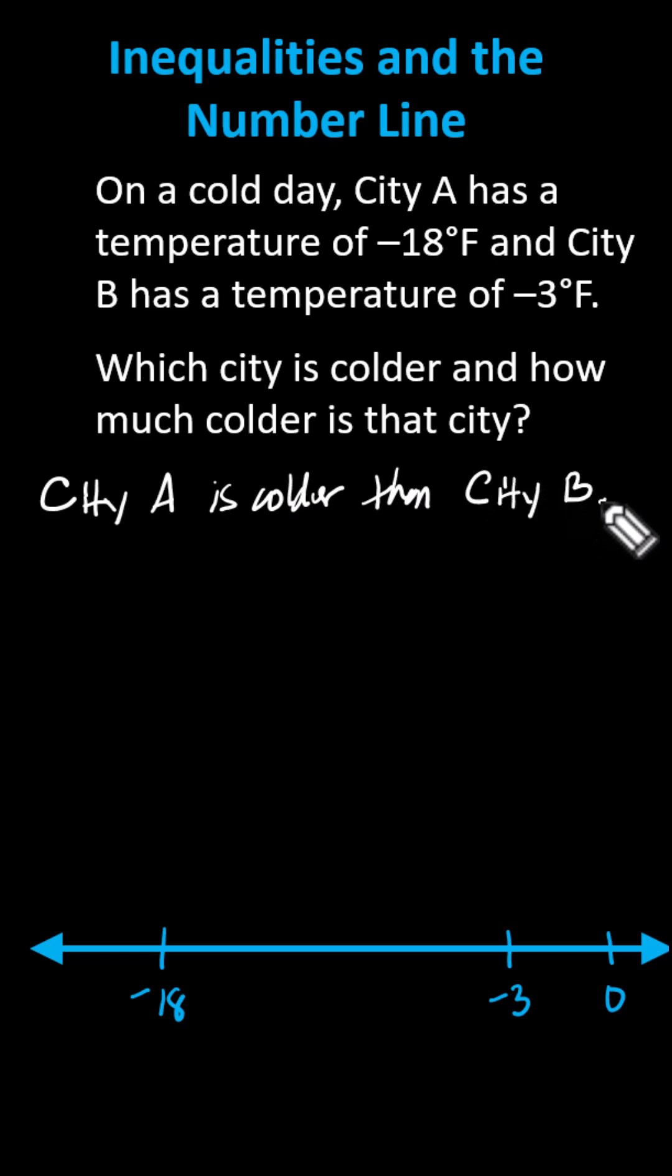And to determine how much colder city A is, let's determine the absolute value of negative three, and the absolute value of negative 18. Recall the absolute value of a number is a number's distance from zero.